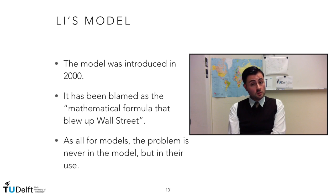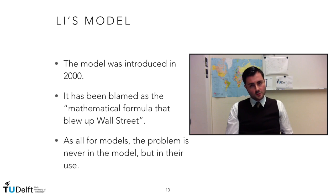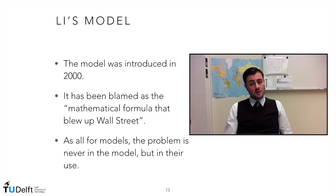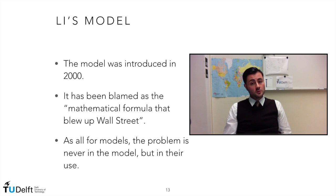Li's model is a model that was introduced in 2000, and during the last crisis was even blamed as the formula that blew up Wall Street. This is quite an exaggeration — on the course platform you find some extra reading that I think are really interesting. No single model can actually blow up Wall Street. Models are, if you want, neutral. It's the way in which we use them that can generate problems, so we always need to know the weaknesses of the models we are using. Li's model can be considered a threshold model or a survival model, and we are covering it here because it is a quite famous model that can be seen as a threshold model in terms of equivalence.